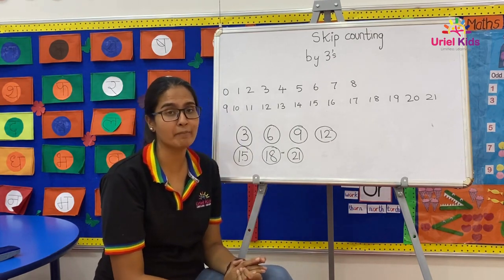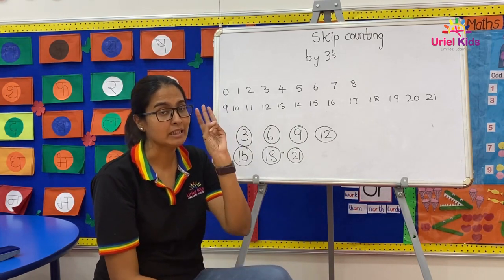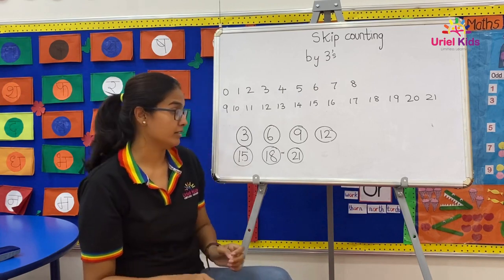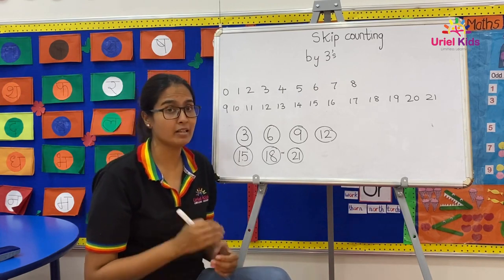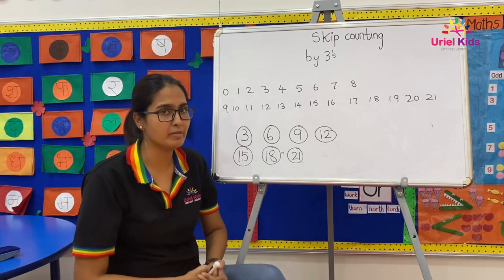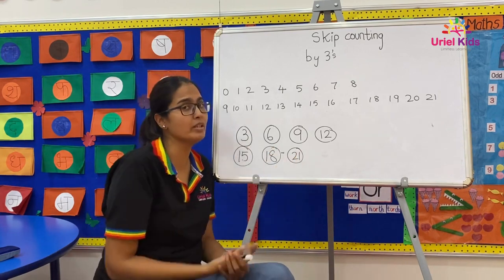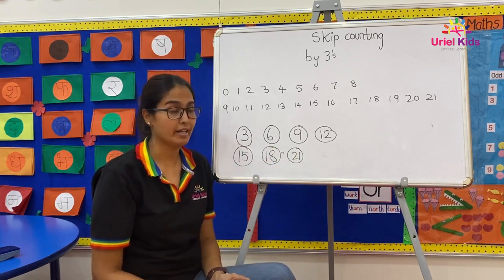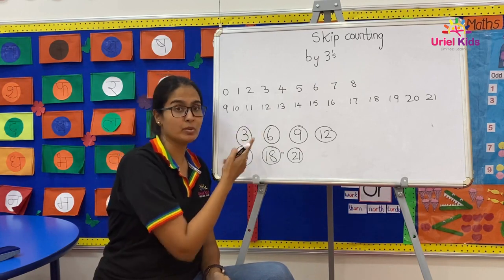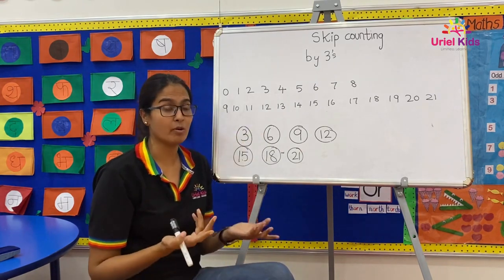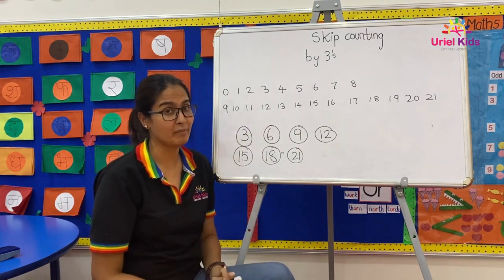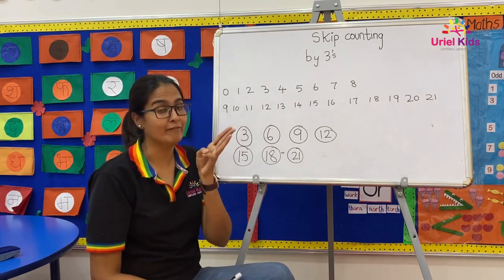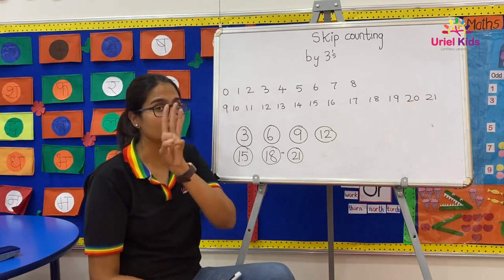So this is a song for skip counting by threes. What did you notice in this song? Did I take the numbers in sequence, or did I miss out any numbers in between? Yes, you guessed it right — I have missed two numbers in between. So that is what is called skip counting by three.